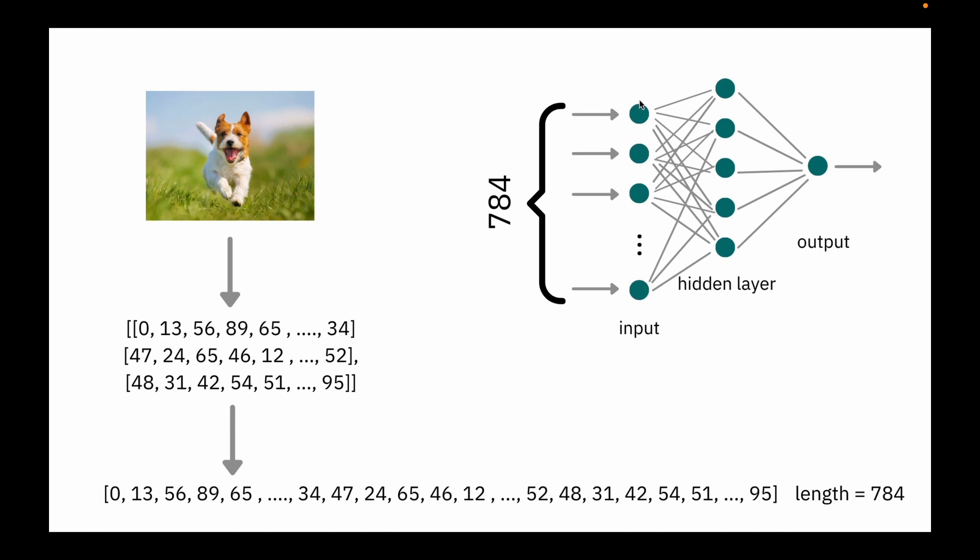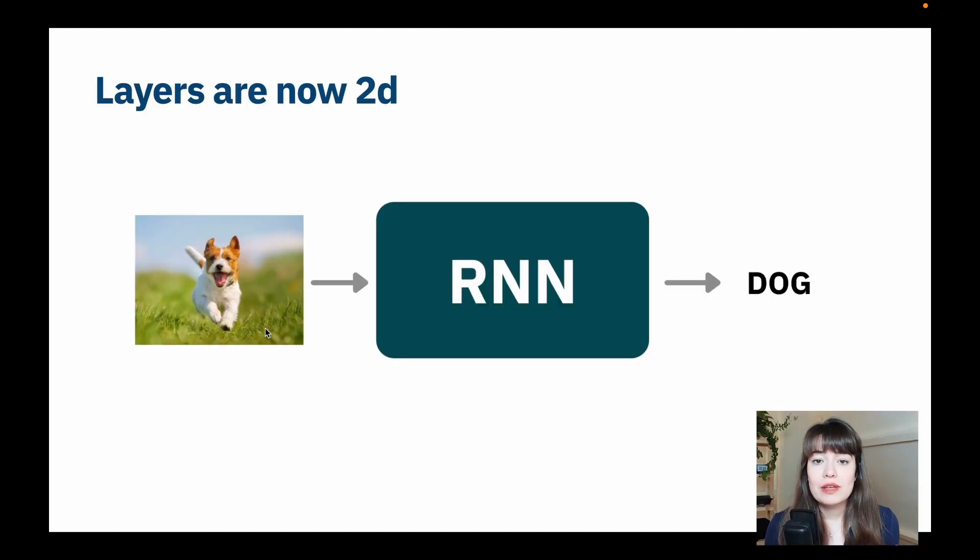So then we would have to have 784 input neurons. And then those input neurons, these values of the input neurons will be passed to the hidden layer and then to the output layer. The difference is with convolutional neural networks, you can just pass your image as it is, as in its 2D form or 3D form even, if it's a colorful image like this one inside the RNN, and then the RNN does its magic, and then you get your prediction classification or whatever that is that you're trying to do.